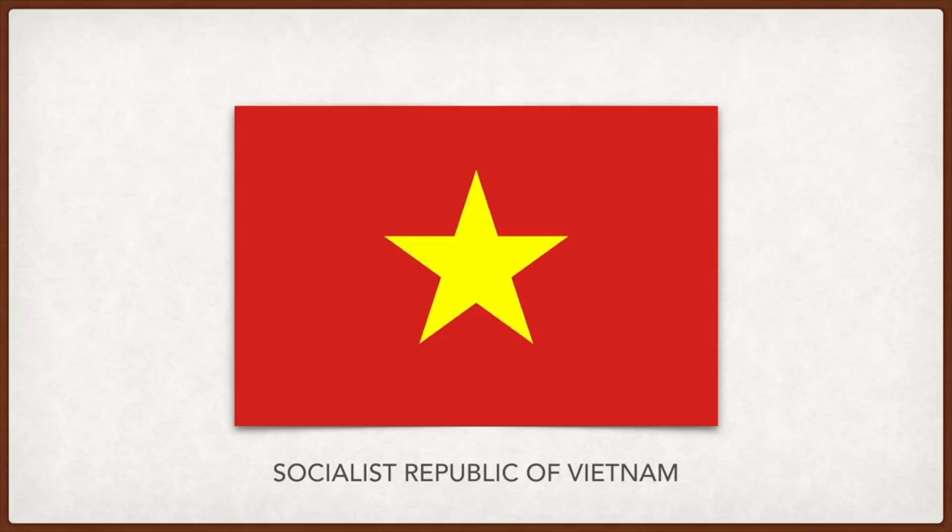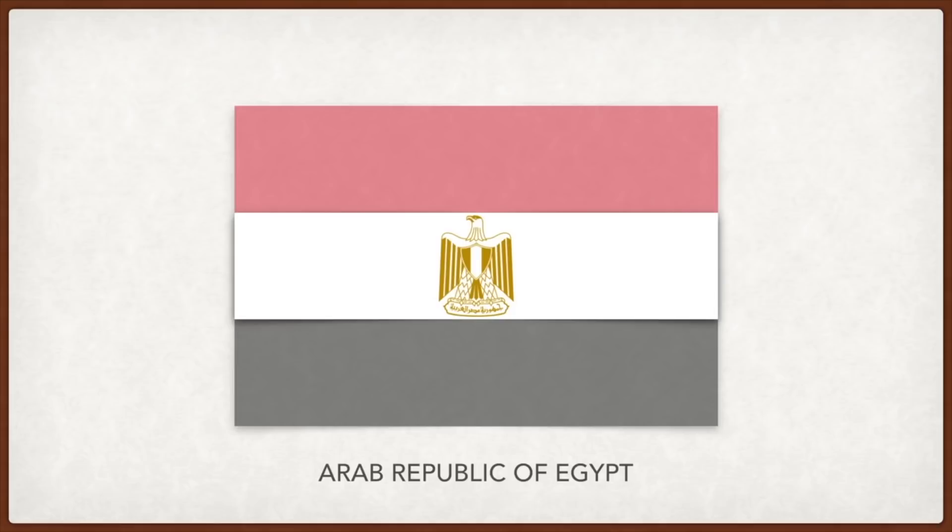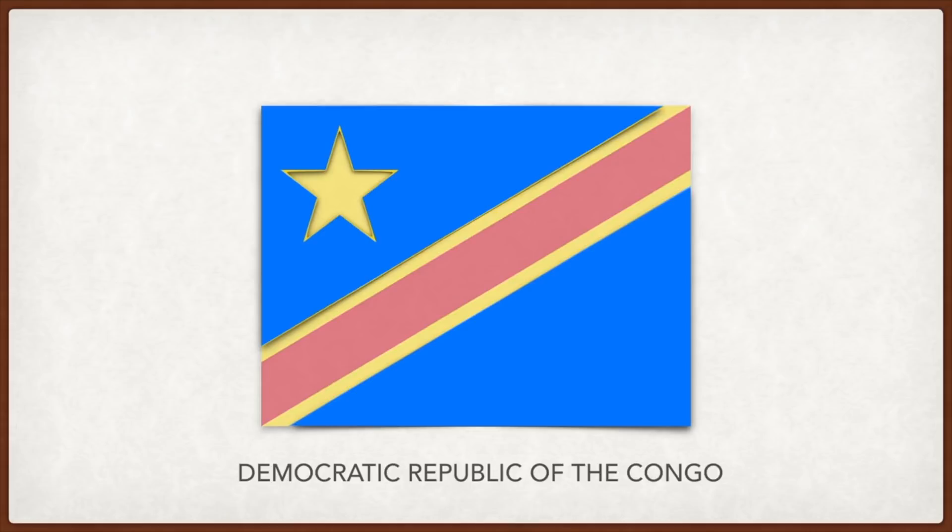Specifically the Vietnamese people in five classes: intellectuals, farmers, workers, businessmen, and military. Egypt: the red represents the British occupation of the country, the white the bloodless revolution, and the black independence.